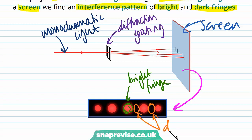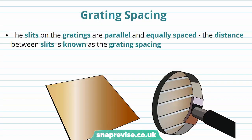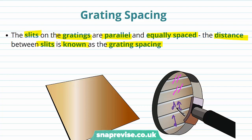Now that we know what the diffraction grating is, we're going to look at grating spacing, which is the distance between the slits. The slits on the grating are parallel and equally spaced, and the distance between slits is known as the grating spacing. We call this D — D is the grating spacing.